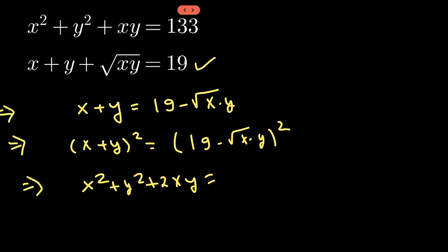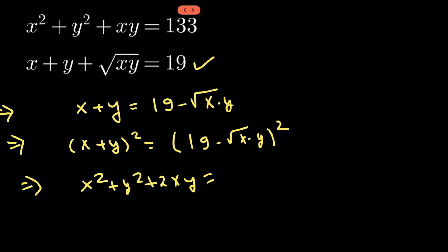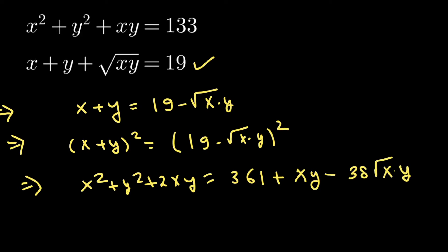Opening the bracket on the right-hand side gives 19² = 361, plus (√(xy))² = xy, minus 2 × 19 = 38 times √(xy). To solve this equation we need to do a substitution, and for that we will use the first equation.